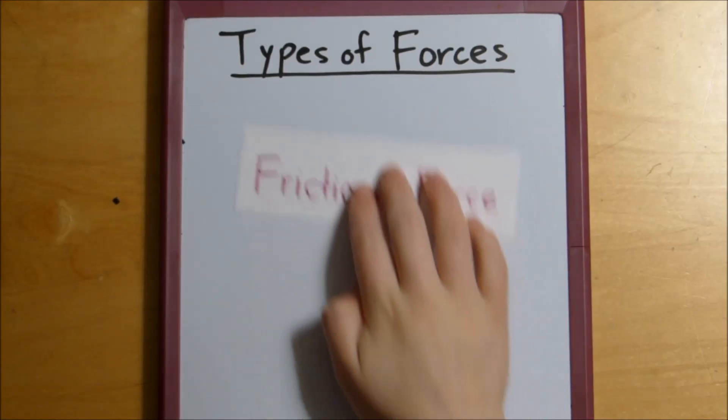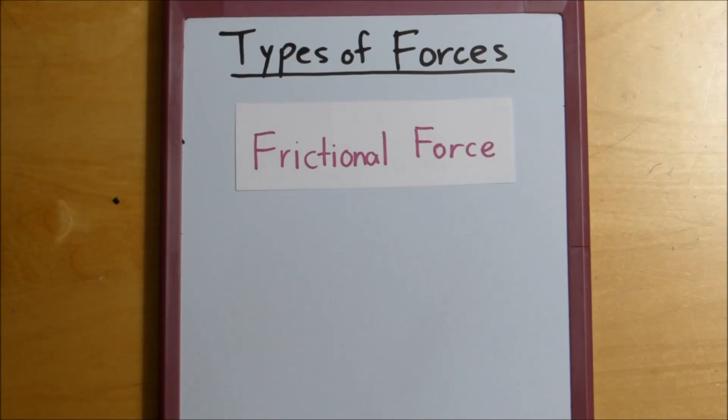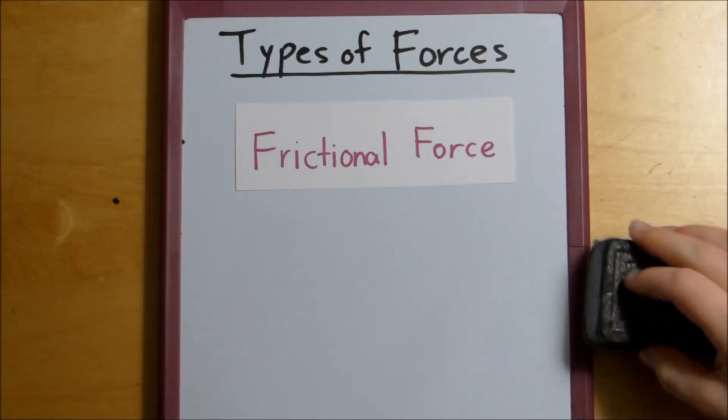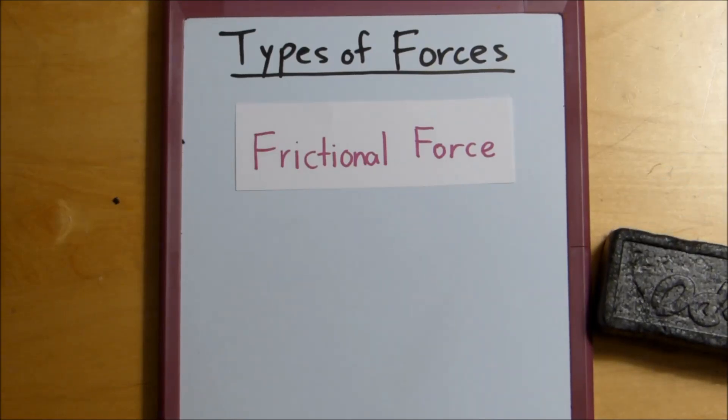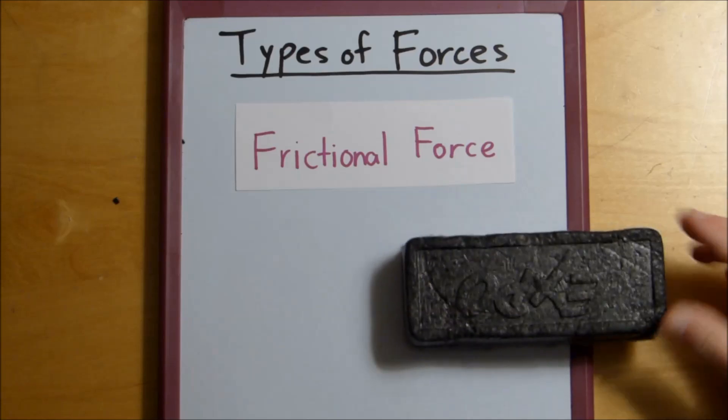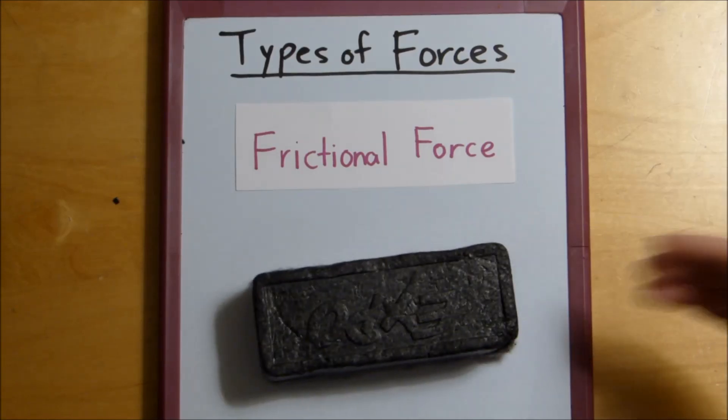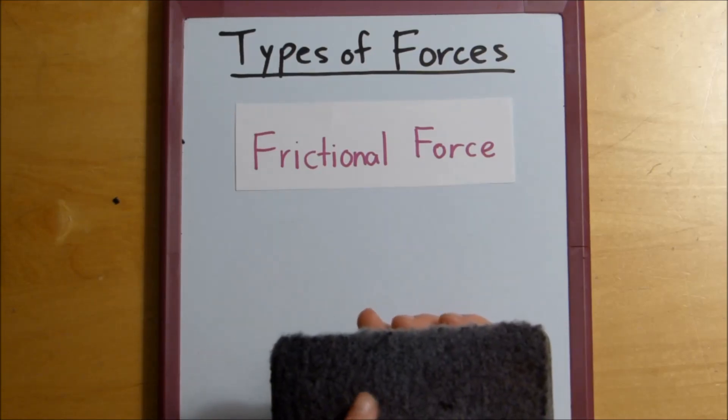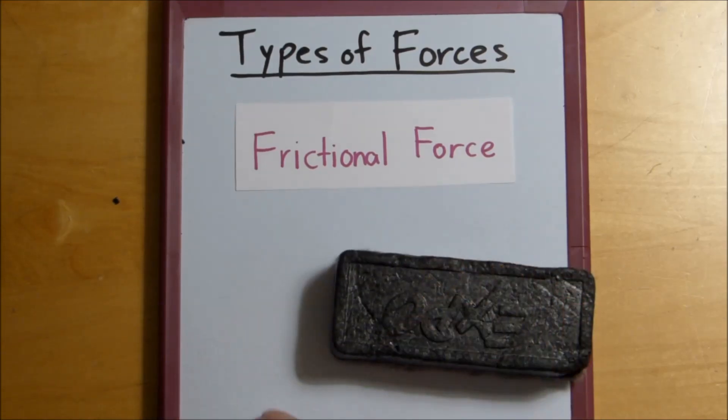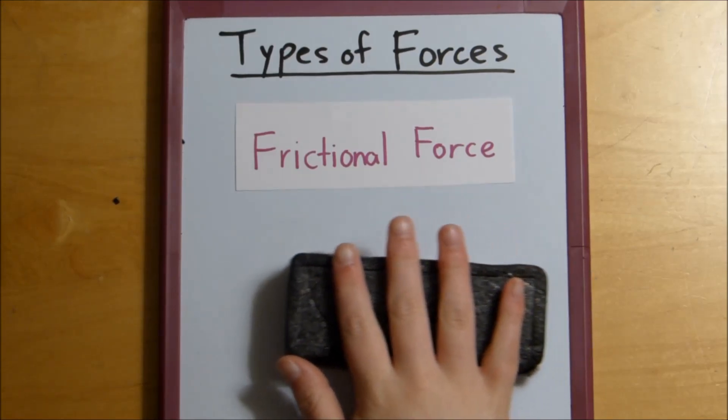Our next type of force is frictional force. And frictional force opposes motion and is caused by the interaction between two different objects. So, frictional force, as you know, friction slows down objects. So if I push my eraser, the frictional force between the whiteboard and the bottom of the eraser, the board applies frictional force onto the eraser so that it stops moving.